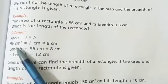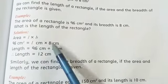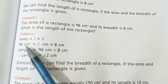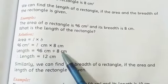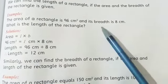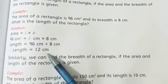Length equals area divided by breadth. We shift this here. This equals 96 divided by 8 equals 12 cm. So the length of that rectangle will be 12 cm.